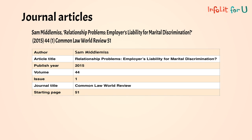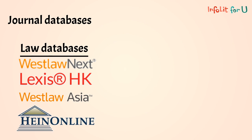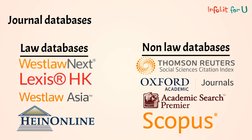Journal articles are generally cited as follows. Law journal articles are sometimes cited by their abbreviated title. Find the full title first by using abbreviation tables or abbreviation dictionaries. Here are the law databases with journals and non-law databases with law journals.